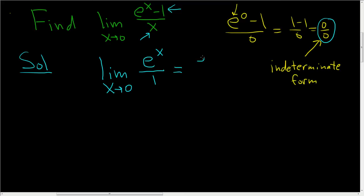So now you can just plug in 0. So you get e to the 0 over 1, which is 1 over 1, which is 1. And that was a pretty easy problem using L'Hopital's rule.